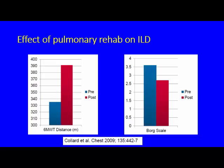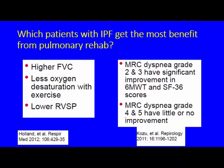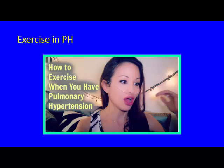For pulmonary rehab in ILD, Collard et al. in Chest 2009 found improvements in the Borg scale and six-minute walk distance and identified which IPF patients would benefit most. However, another article noted that exercise tolerance benefits in ILD — particularly IPF — were short-term; patients did well for the first six months of a year program but showed deterioration thereafter.